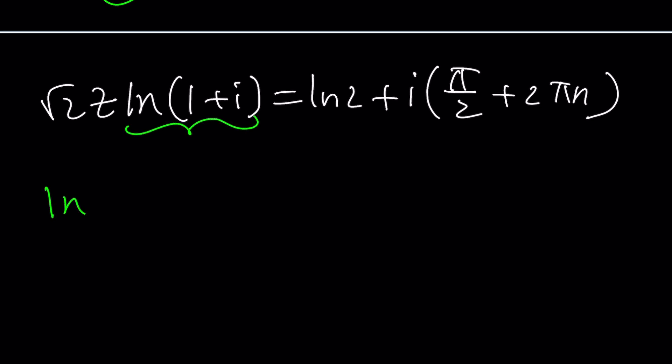And that's going to give us, of course, ln e is 1 so it's going to be root 2z ln 1 plus i equals ln 2 plus i times pi over 2 plus 2 pi n. Not so awesome but we're going to make it better. So now what are you going to do with this? So let's go ahead and talk about ln of a complex number. To find ln 1 plus i, to keep a long story short, we're going to find the modulus of 1 plus i which is root 2 from Pythagorean theorem.